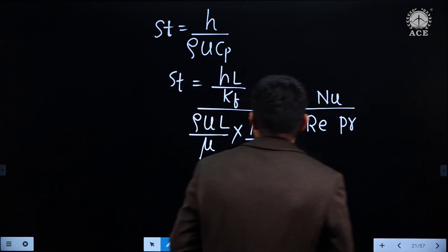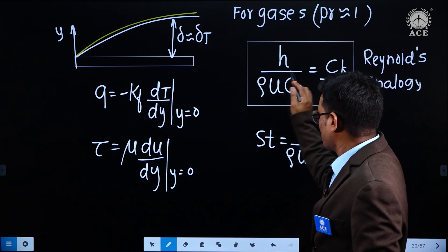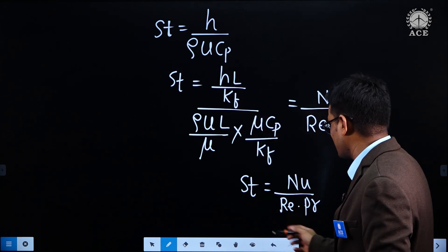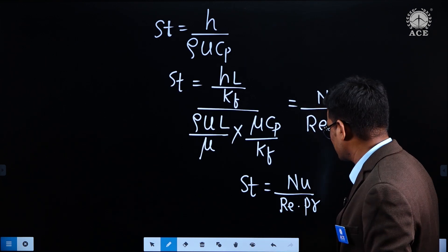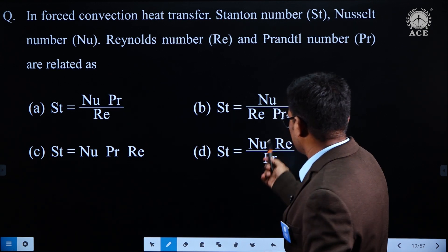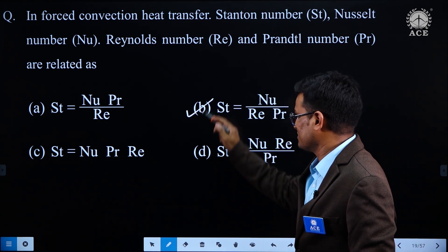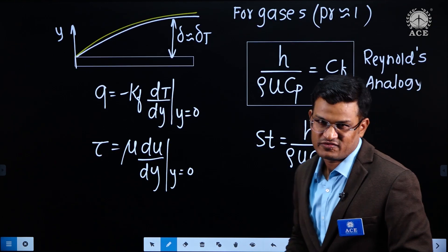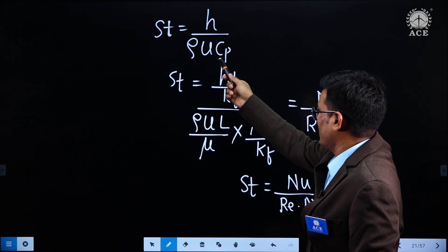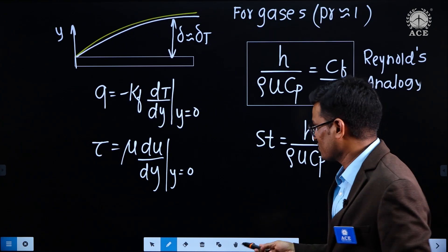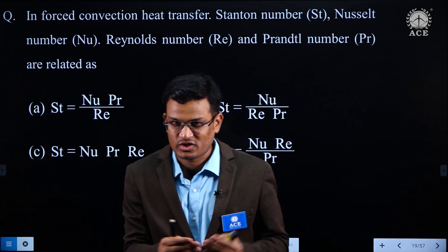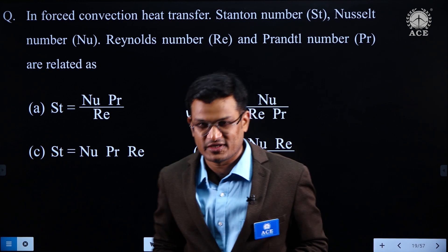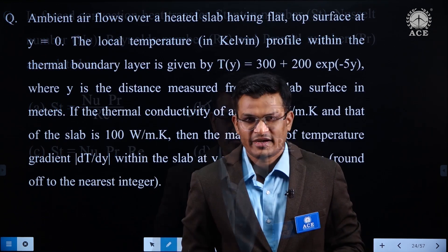So Stanton number is equal to Nu upon Re × Pr — this is the right answer. The other arrangements are not correct. All students know Stanton number equals Nu / (Re × Pr), so they can directly take the answer and proceed. This is the simplest question from external flow convection. Let us move to the next question.